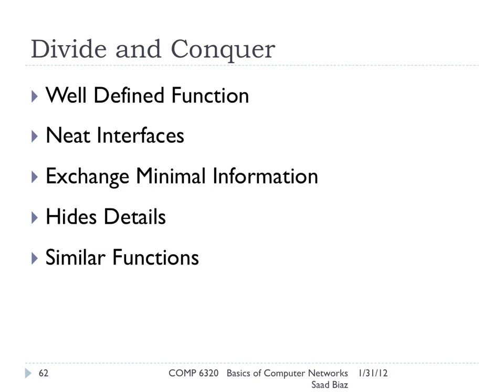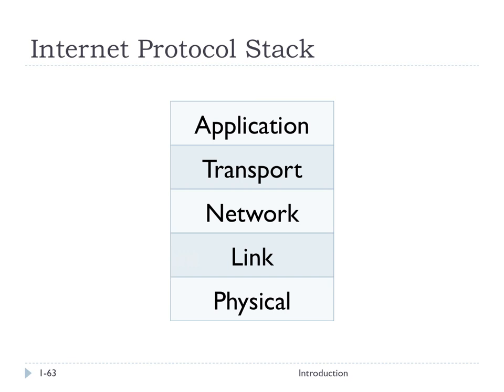The Internet Protocol stack is layered into five areas: application, transport, network, link, and physical. These are the five things we're going to look at in this class — Chapters 2, 3, 4, and 5. We won't cover the physical layer in this class, as it's more electrical engineering than computer science; in your physics class you'll cover how signals move.